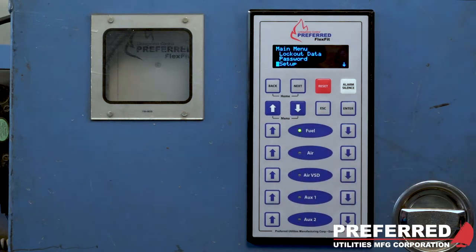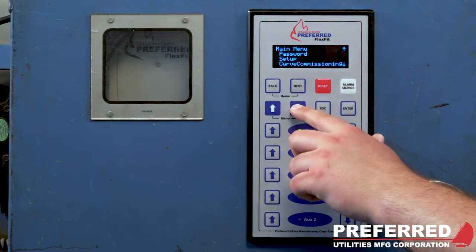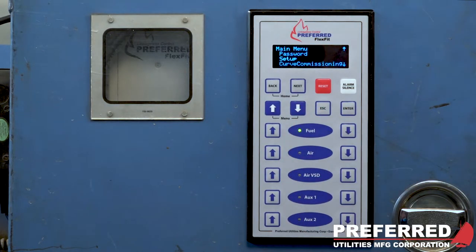Next submenu is your setup. And this is where you will input different application and setup parameters. Below that is curve commissioning. And this is where you would go to enter your firing rate data and set up your firing curves.